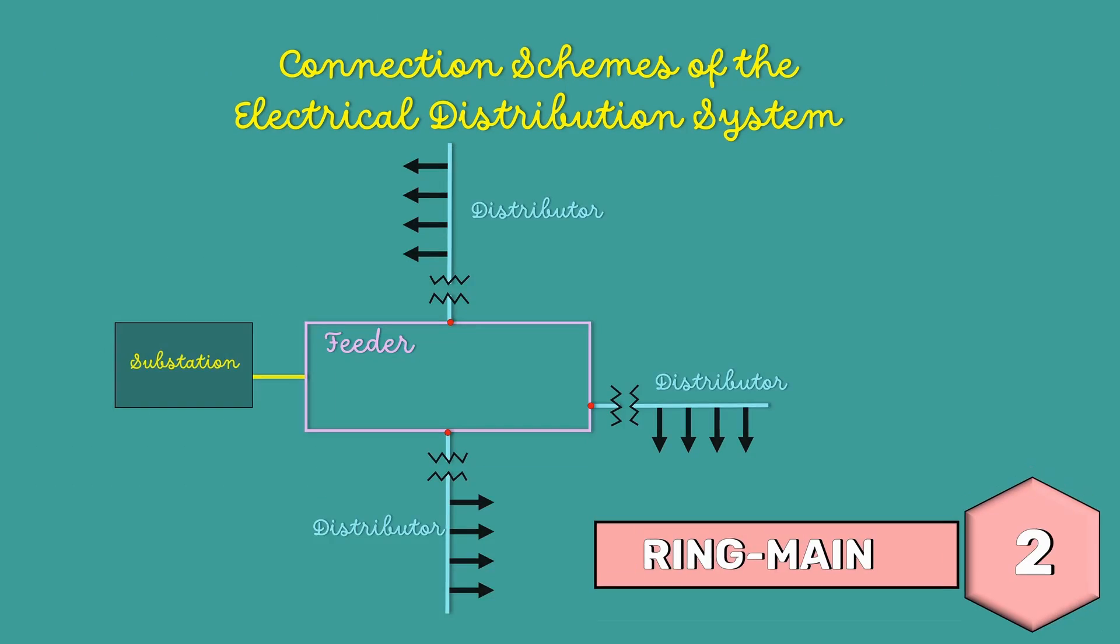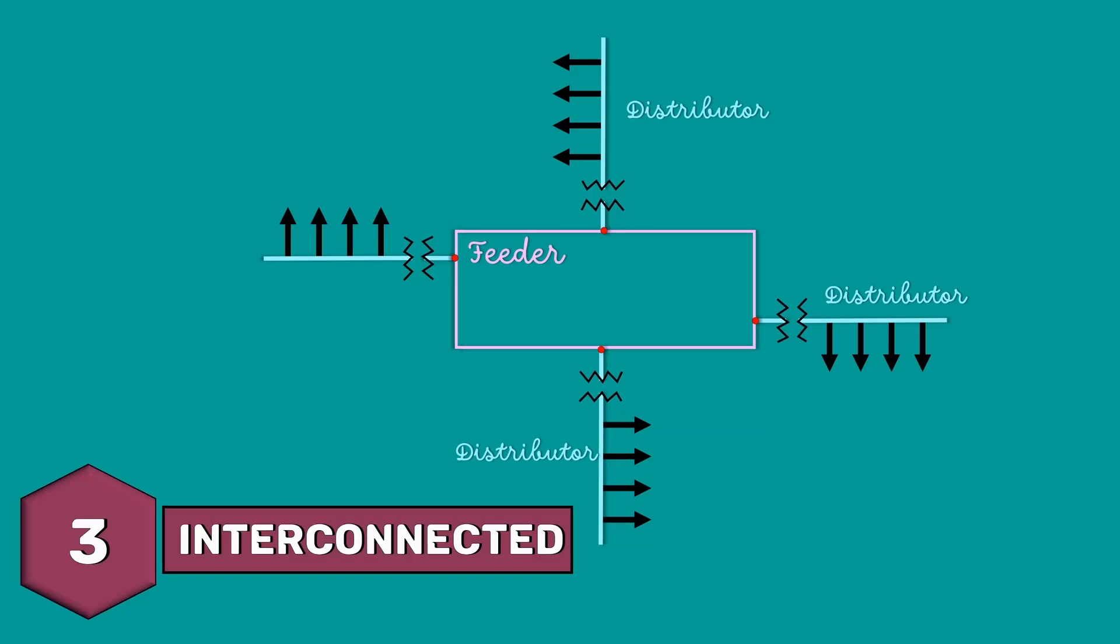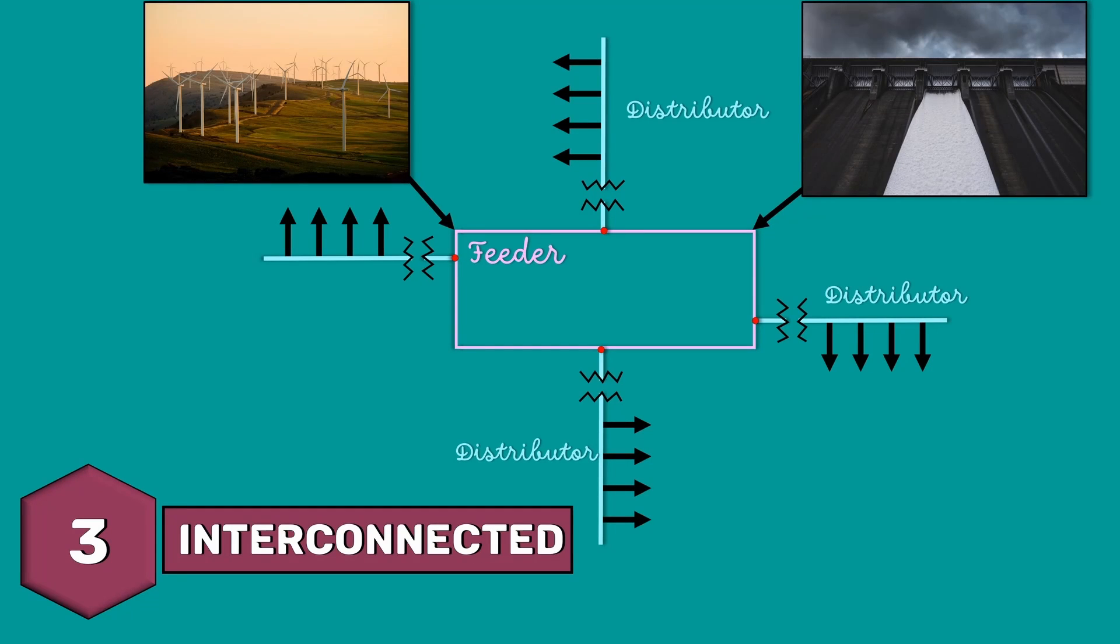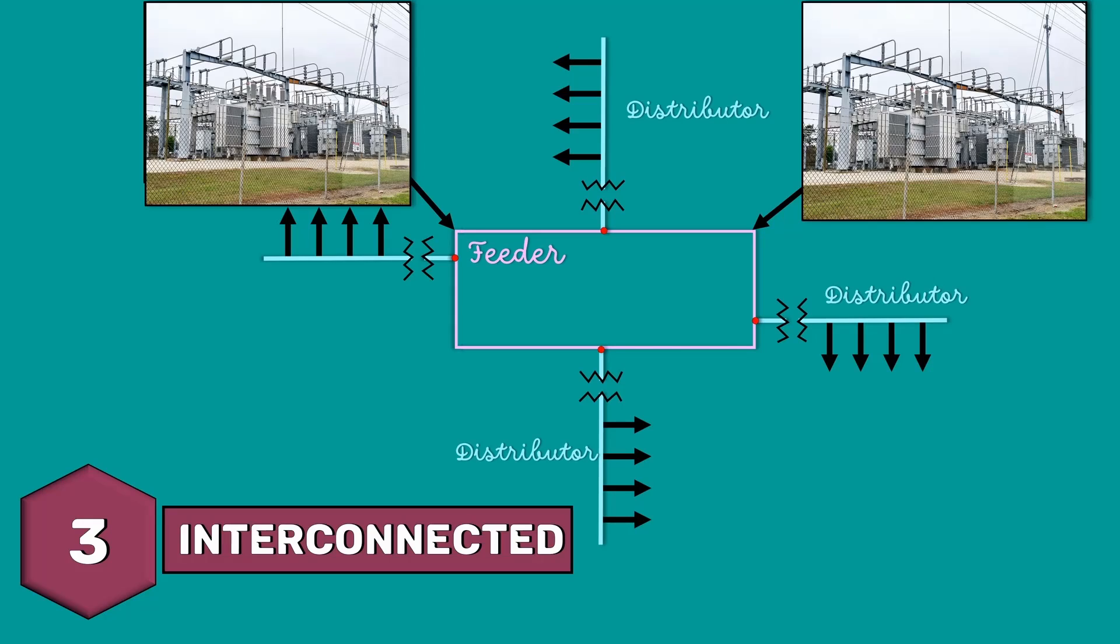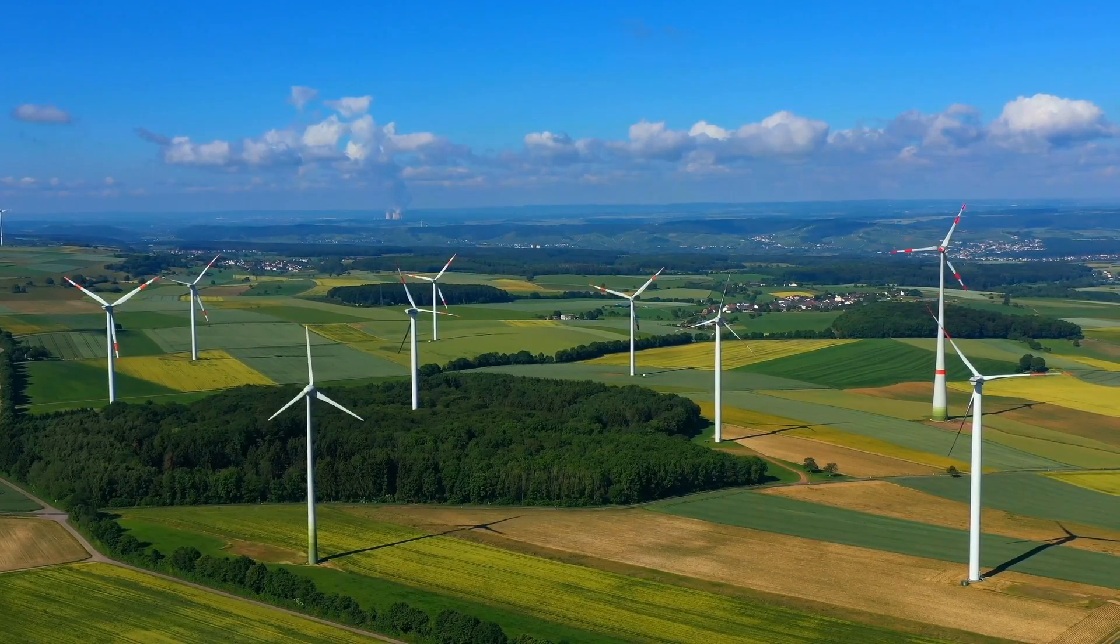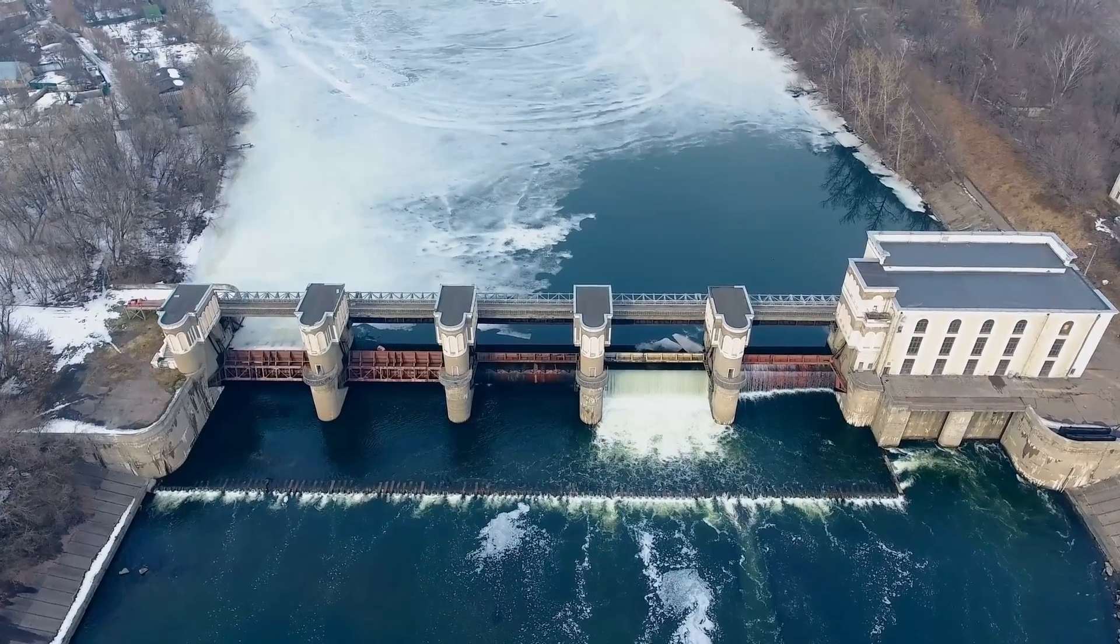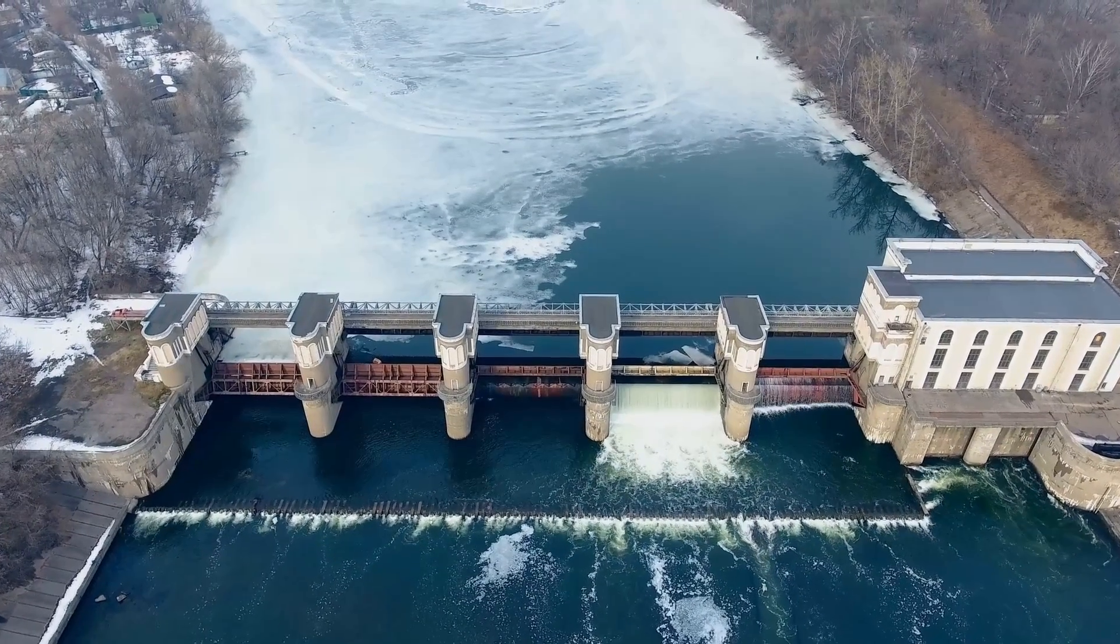Now, let's move on to our next system, interconnected system. Here, the feeder ring is energized by two or more generating stations or substations. This increases service reliability. Any area fed from one generating system during peak load hours can be fed from the other generating station. This increases the efficiency of the system.